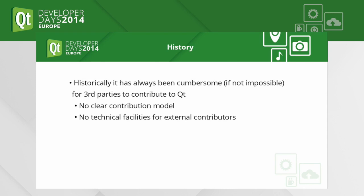It's important to underline that it has not always been the case that you could submit code to Qt. Historically, especially up to Nokia times, it was impossible to merge code into mainline Qt. There were a couple of reasons for that. One was a legal reason — there was no contribution model set up, so they could not accept code from third parties. The second reason was technical: the repositories were closed. People could not see or access the code, could not branch it, or submit patches back. It was all behind closed doors.